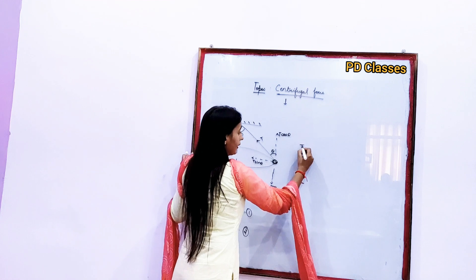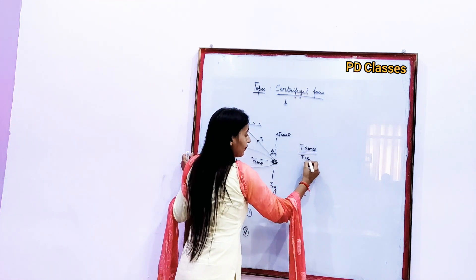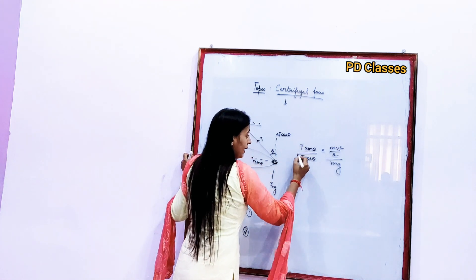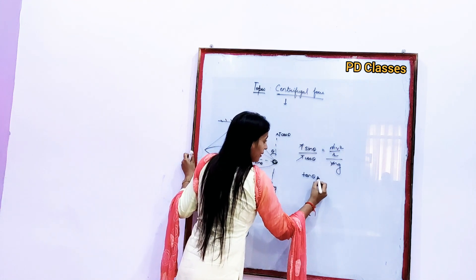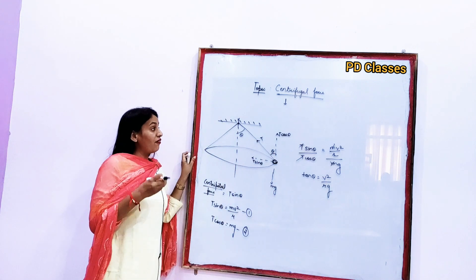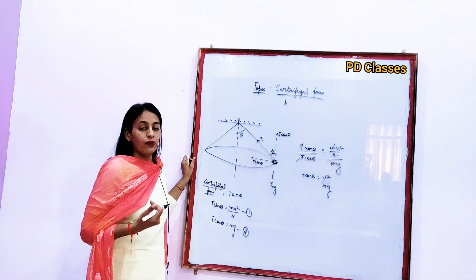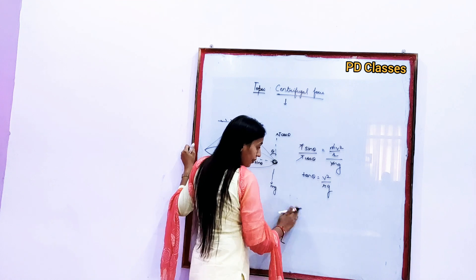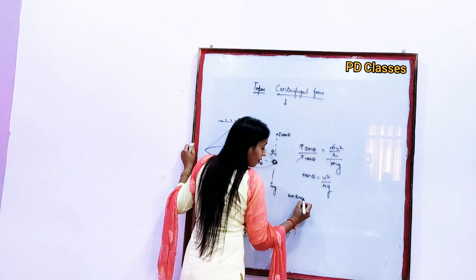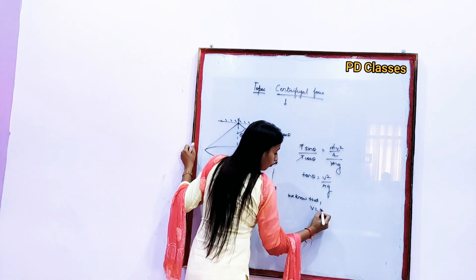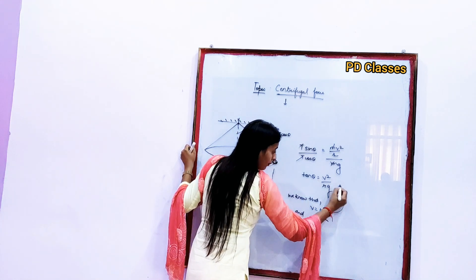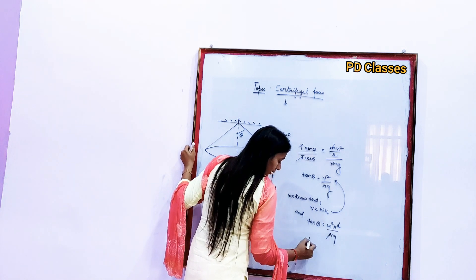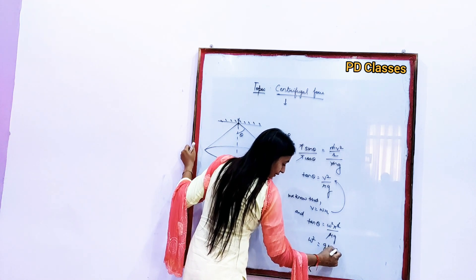If I solve this equation, dividing: T sin theta by T cos theta equals Mv²/R divided by Mg. We get tan theta equals V²/Rg. Since V equals omega R, substituting this value we get tan theta equals omega² R² / Rg, which gives omega² equals G tan theta / R.